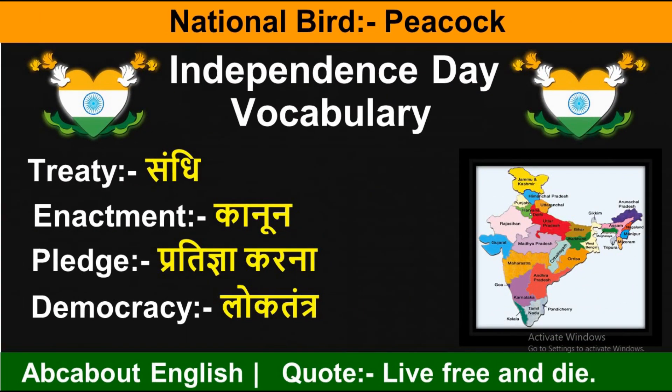Agla word hai 'treaty' — treaty ka matlab hota hai sandhi. 'Enactment' ka matlab hota hai kanoon — kanoon bante hain unhe kehte hain enactment. 'Pledge' yaani pratigya karna — Sardar Bhagat Singh ne pratigya ki thi ki wo desh ko aazad karwayenge, to unhone ek pledge liya. 'Democracy' ka matlab hota hai loktantra — India is the biggest democratic country.